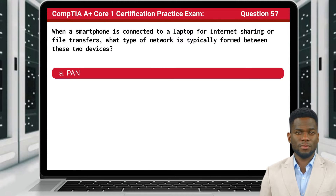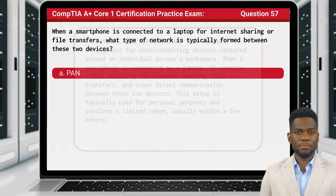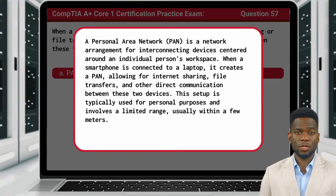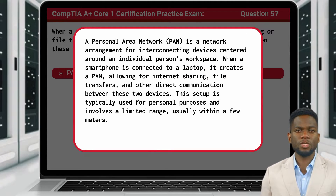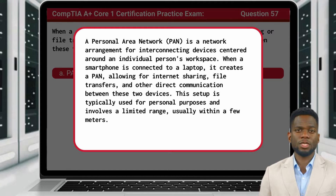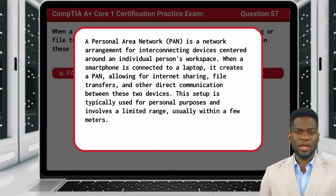The answer is A: PAN. A personal area network is a network arrangement for interconnecting devices centered around an individual person's workspace. When a smartphone is connected to a laptop, it creates a PAN, allowing for internet sharing, file transfers, and other direct communication between these two devices. This setup is typically used for personal purposes and involves a limited range, usually within a few meters.